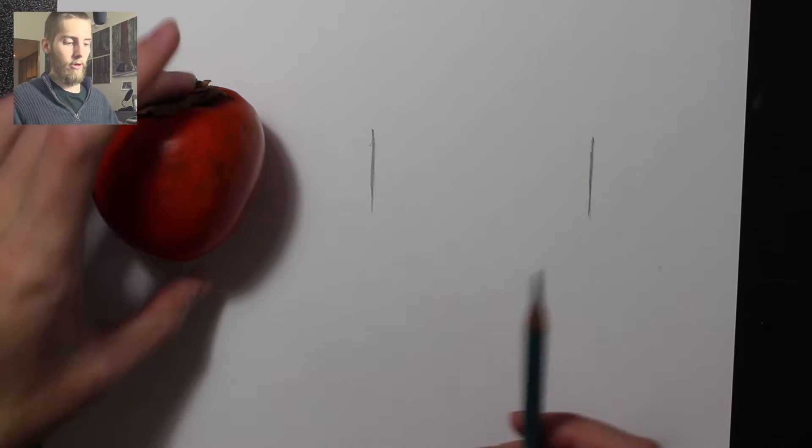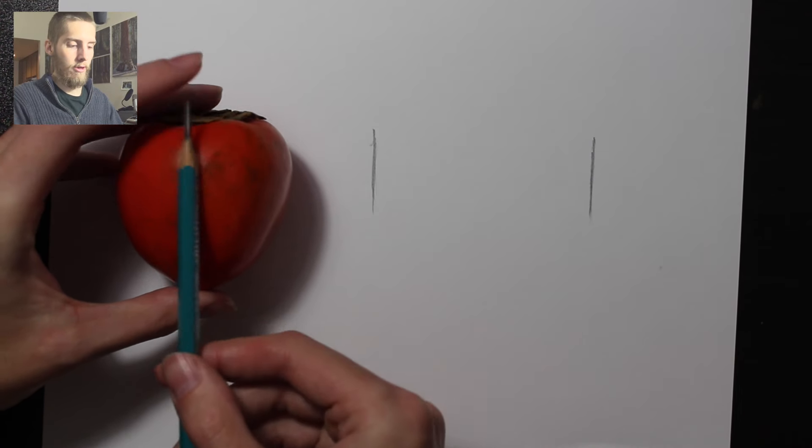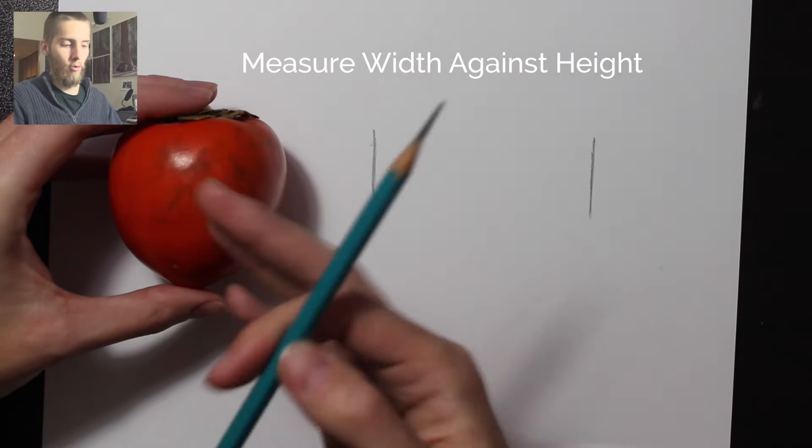I know that these two lines correspond to these two sides right here. Now I can look at my object and observe that it's taller than it is wider, even just by a little bit.